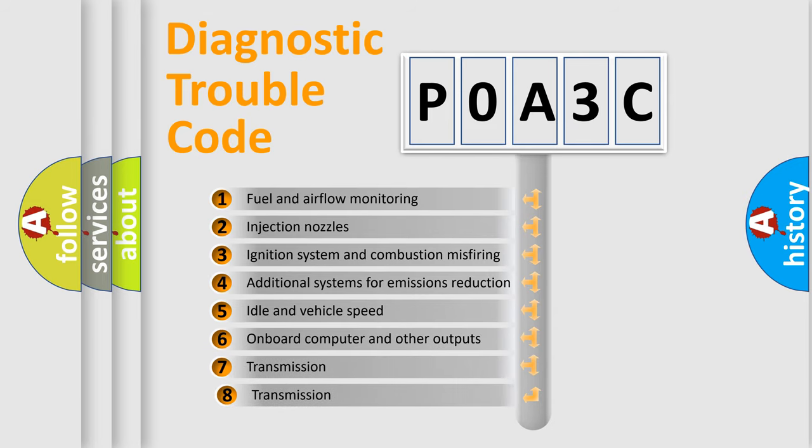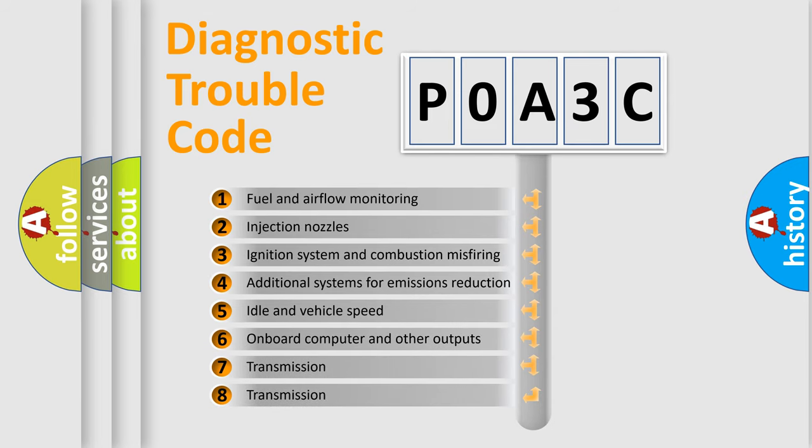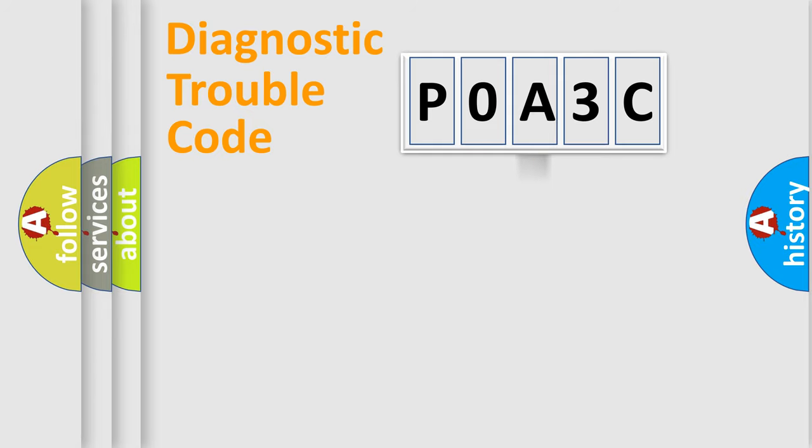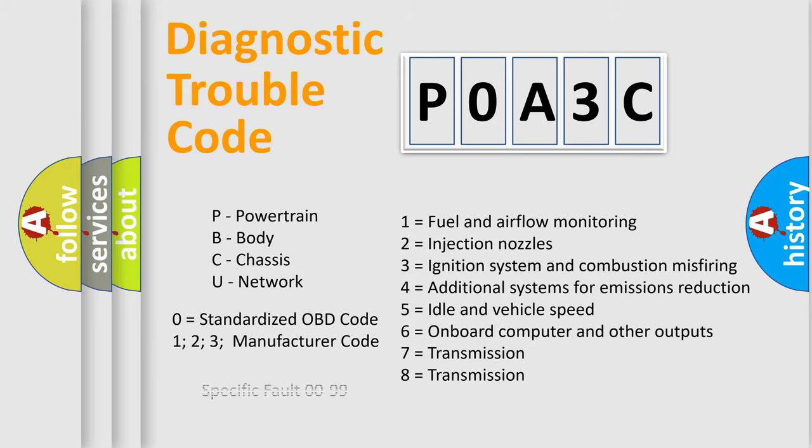The third character specifies a subset of errors. The distribution shown is valid only for the standardized DTC code. Only the last two characters define the specific fault of the group. Let's not forget that such a division is valid only if the second character code is expressed by the number zero.